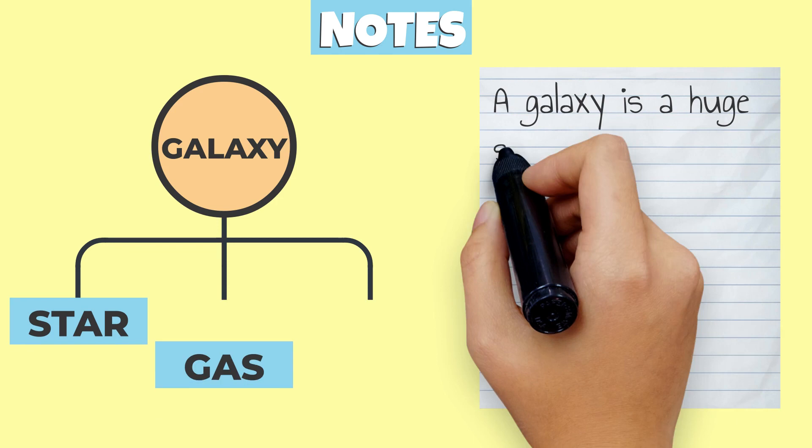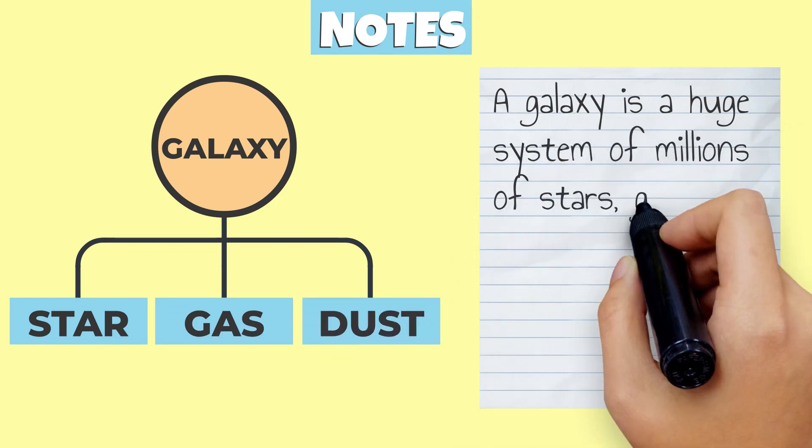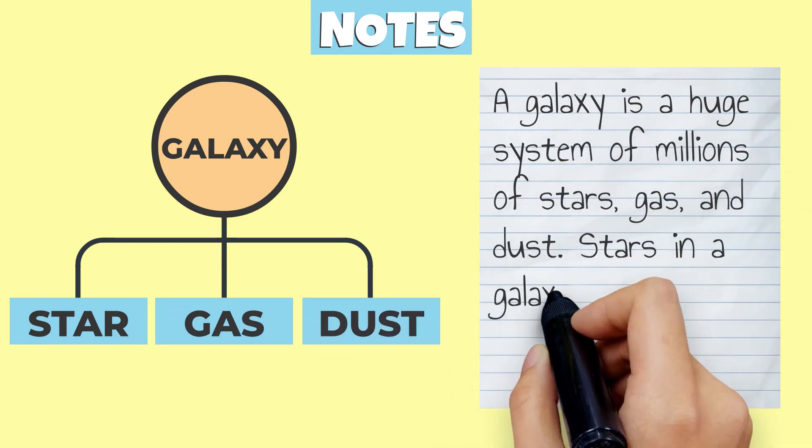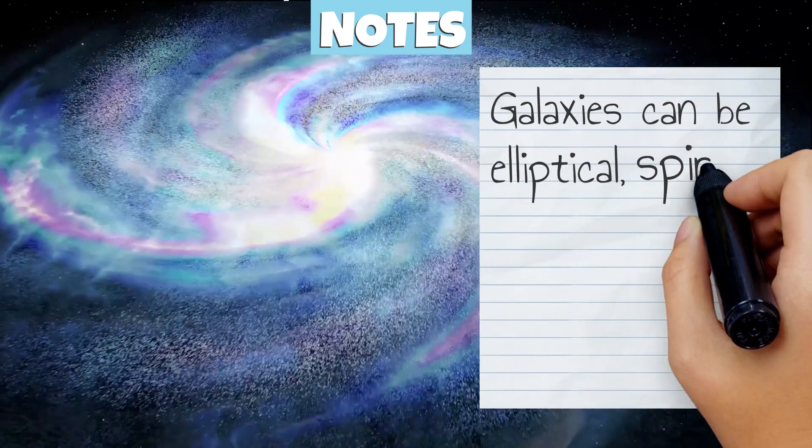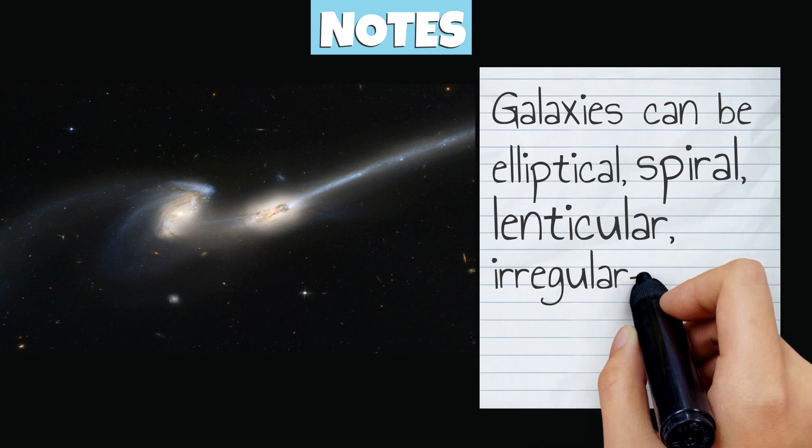A galaxy is a huge system of millions of stars, gas, and dust. Stars in a galaxy are held in place by gravity. Galaxies can be elliptical, spiral, lenticular, or irregular shaped.